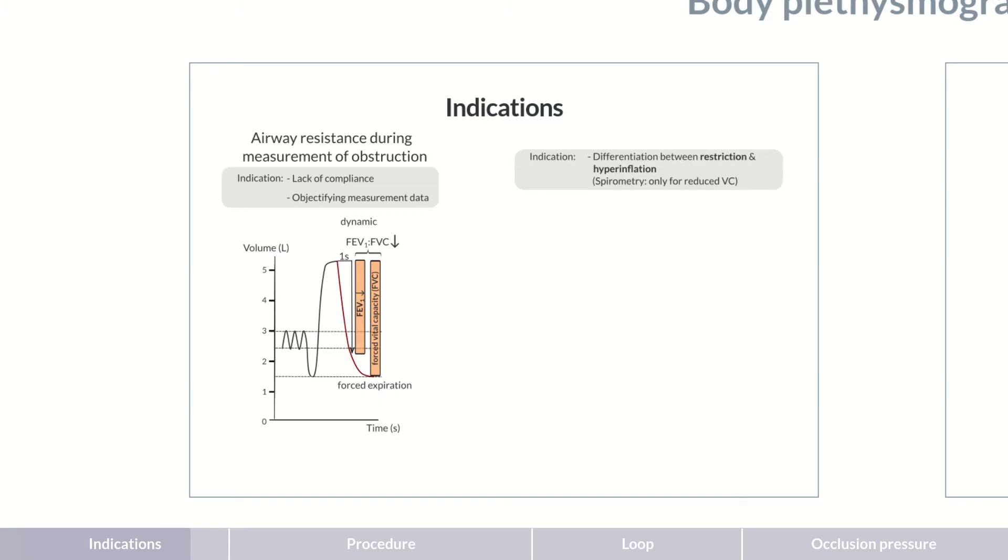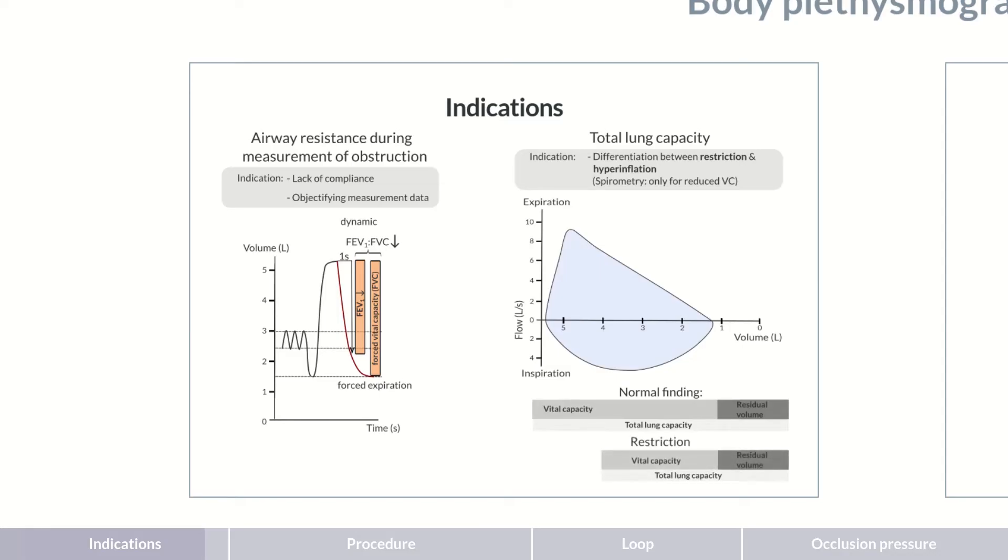Though, differentiation requires knowing the residual volume of the lung, and therefore, the total lung capacity. Compared to a normal finding, the vital capacity is reduced in restriction because the total lung volume is decreased.